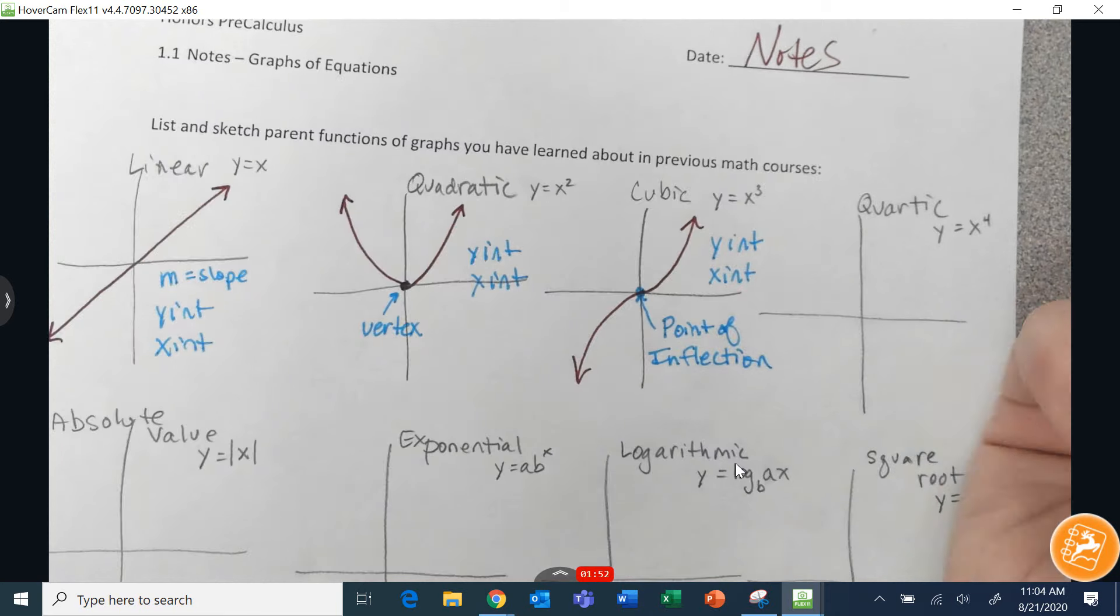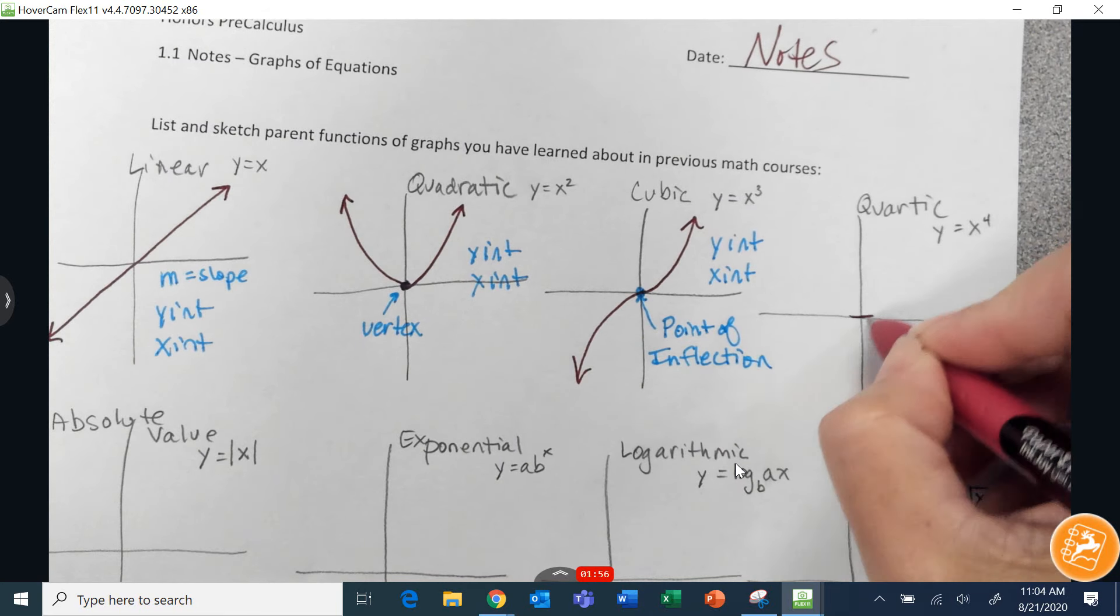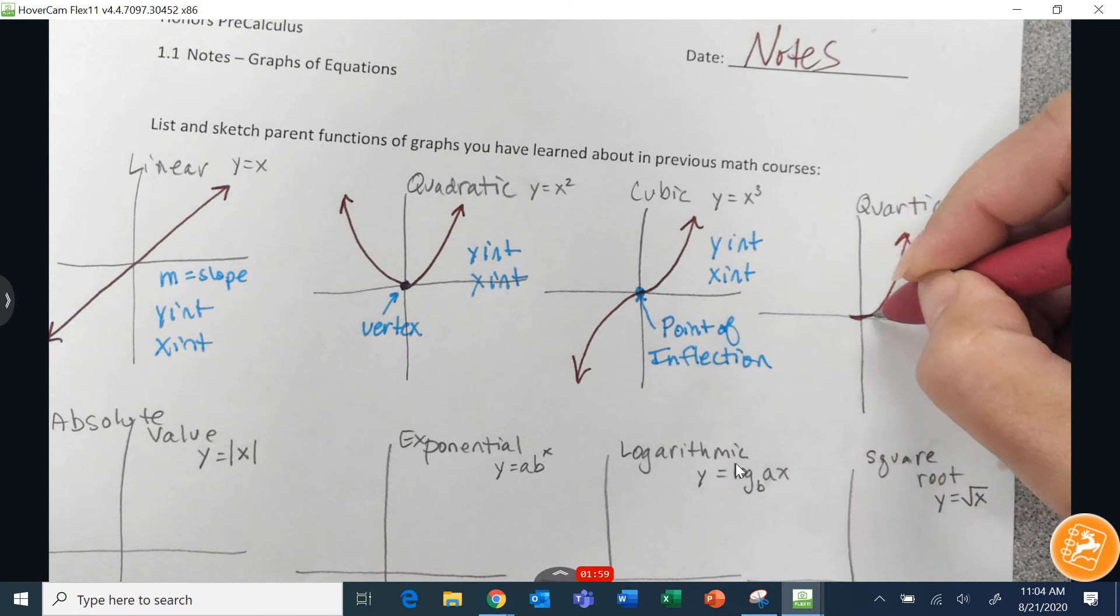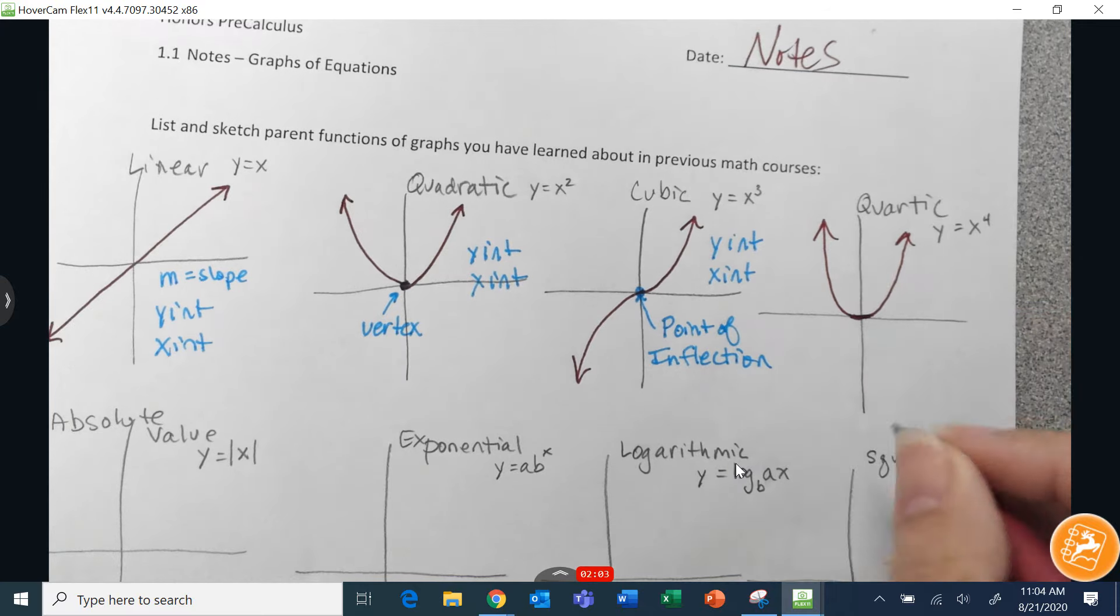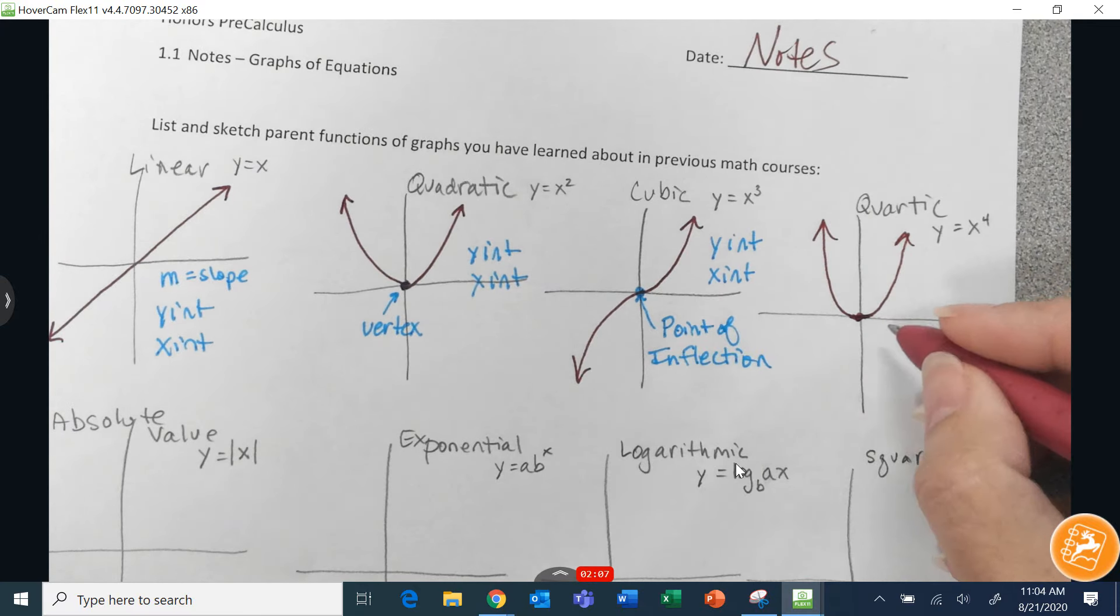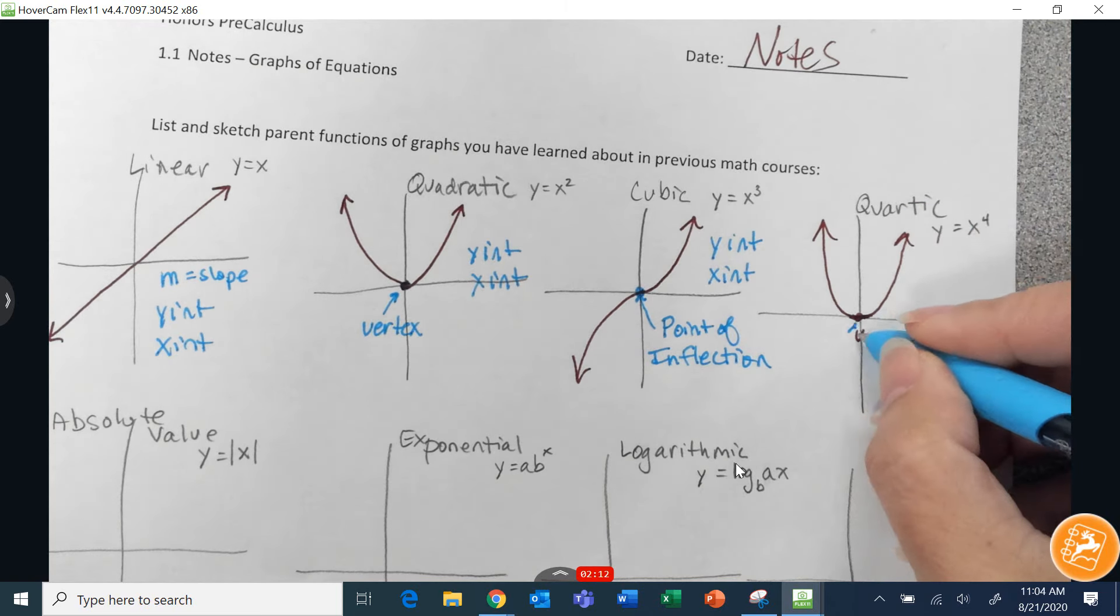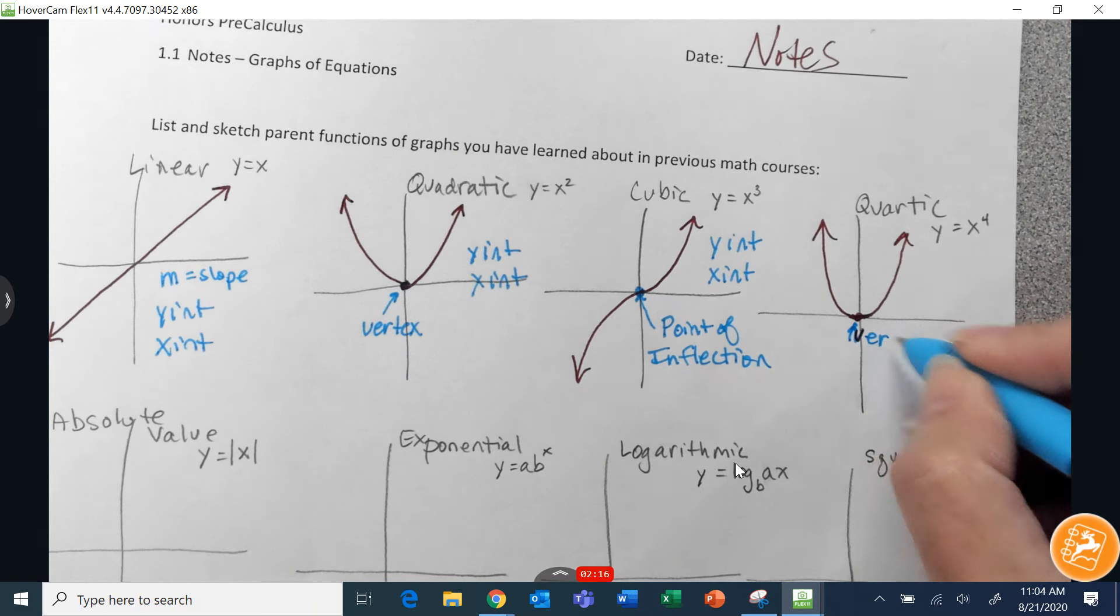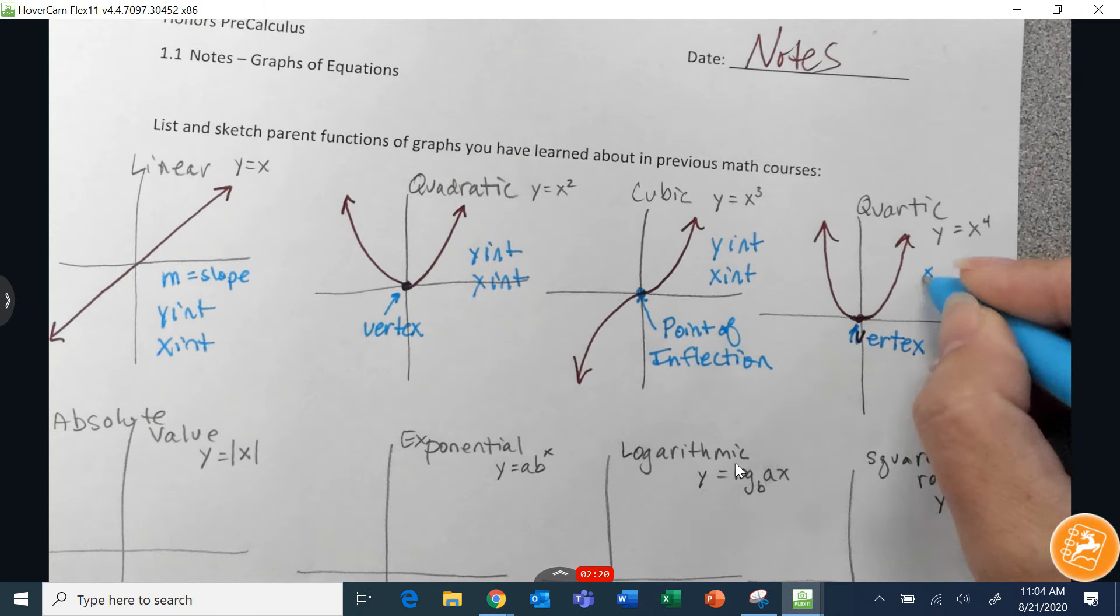Quartic. Quartic looks a lot like a parabola, but it's just a little bit flatter in the middle, and then it rises up faster. That would still be a vertex. It would still be considered a maximum or a minimum of a graph. We would find x-intercepts and y-intercepts.